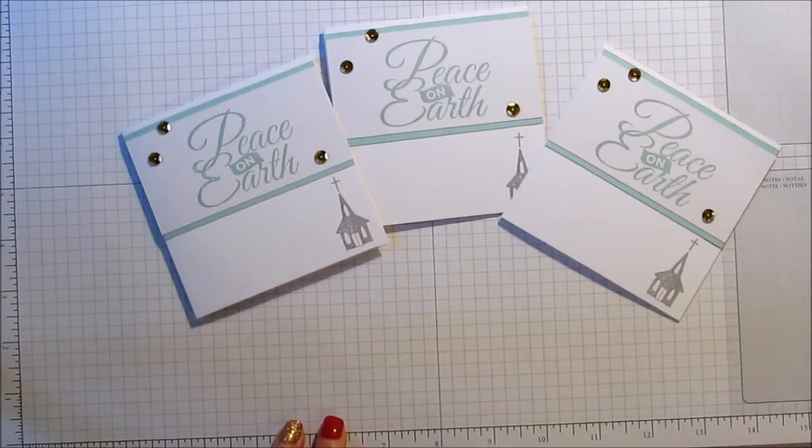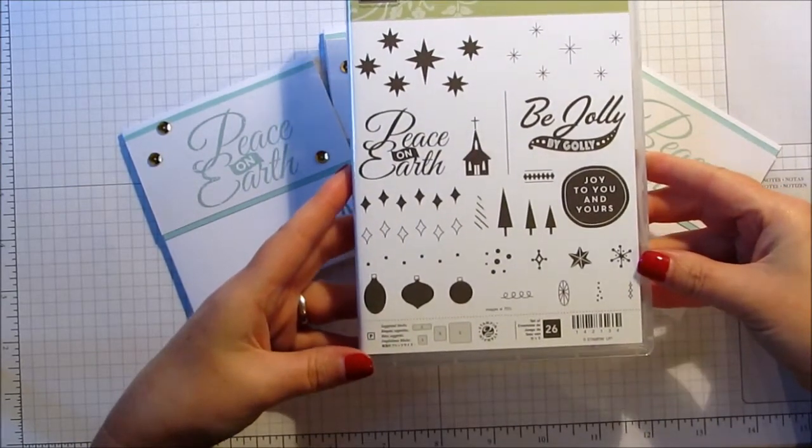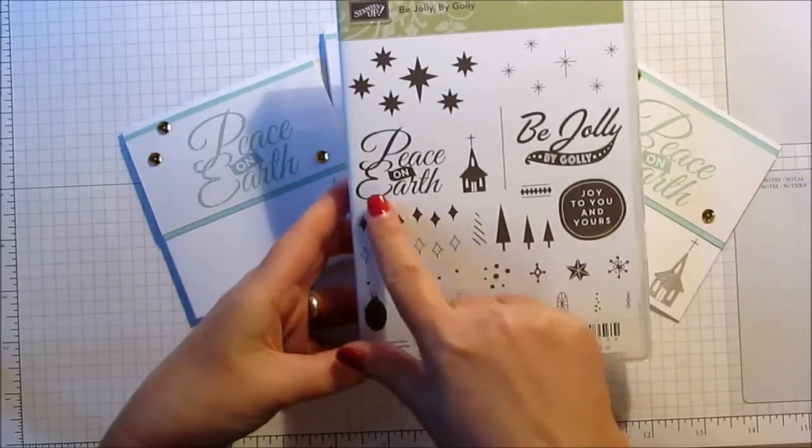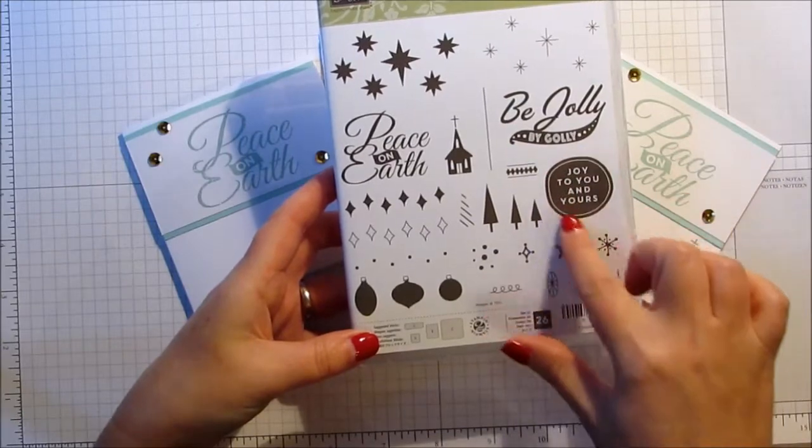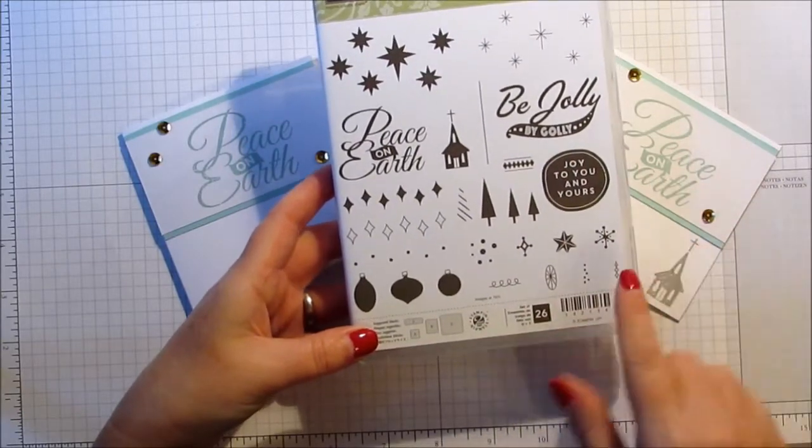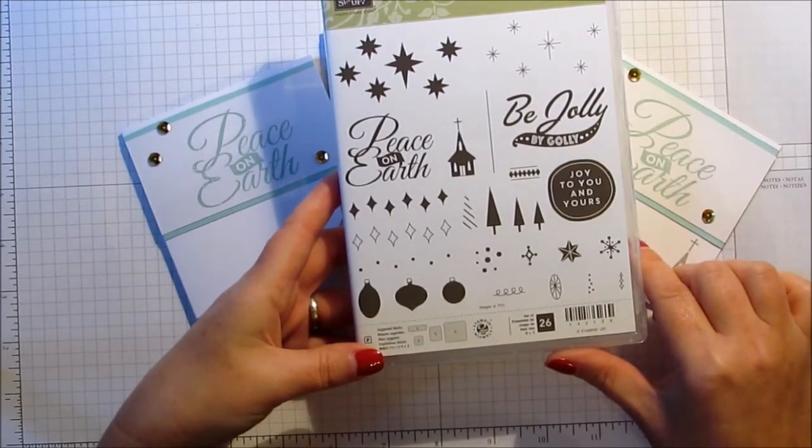This one is using the Be Jolly By Golly stamp set. I love this little set actually, it's really sweet. It's got the two main sentiments, Peace On Earth and Be Jolly By Golly, and then it's also got this little one here which is To You and Yours. But then you've lots and lots of tiny little elements as well, snowflakes, stars and trees.